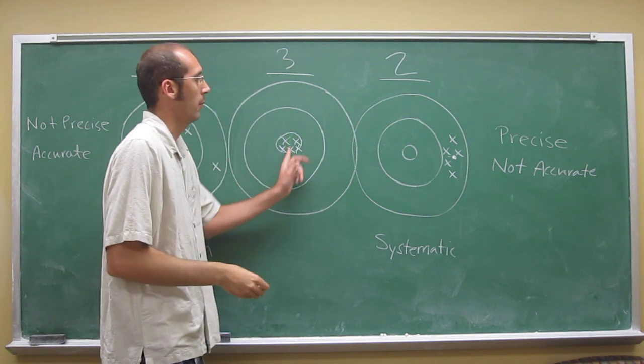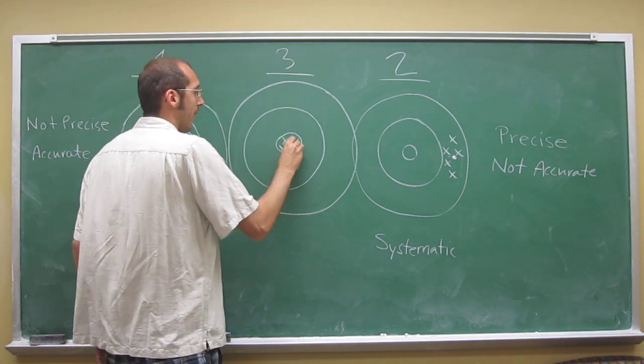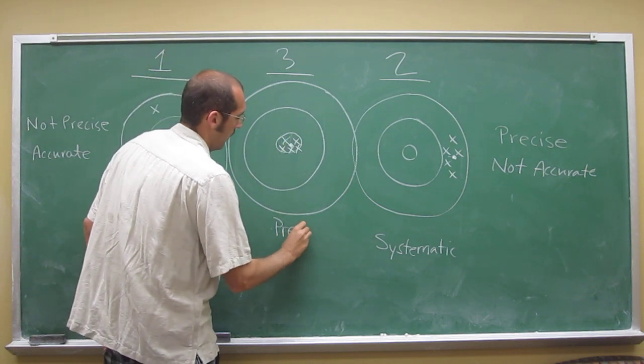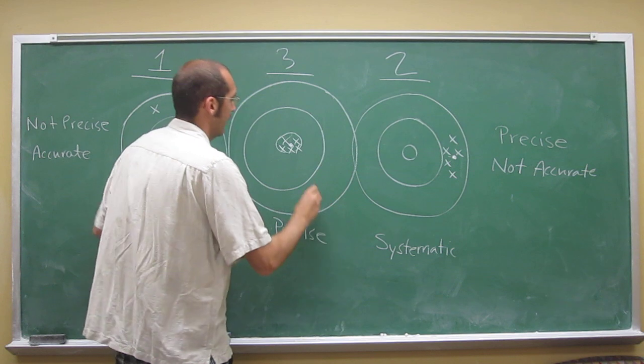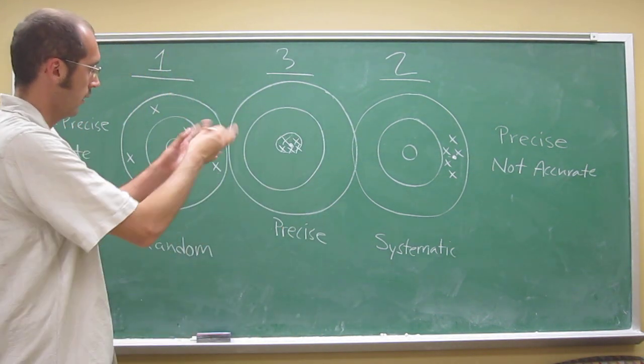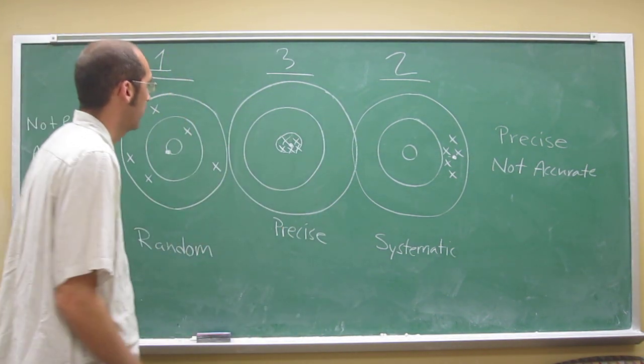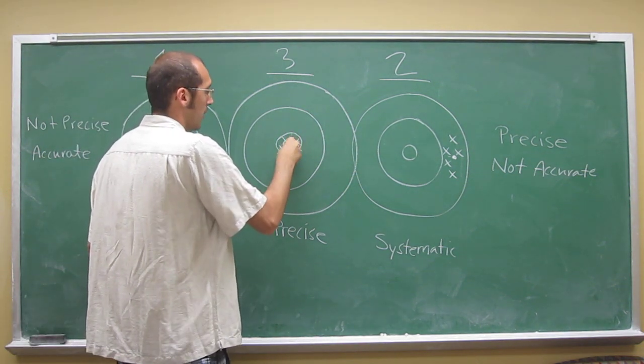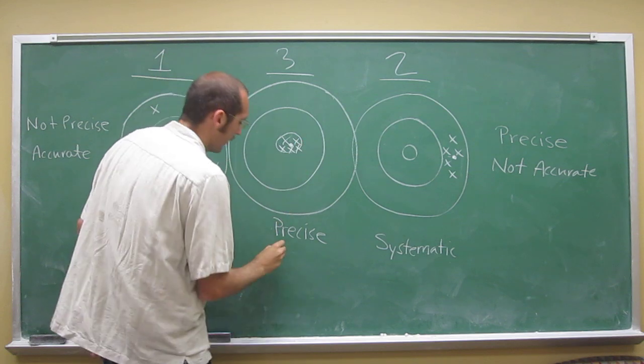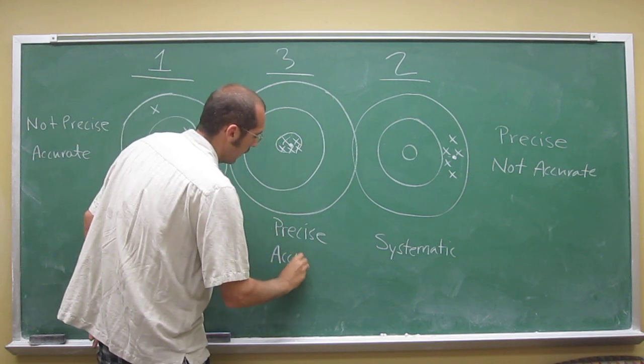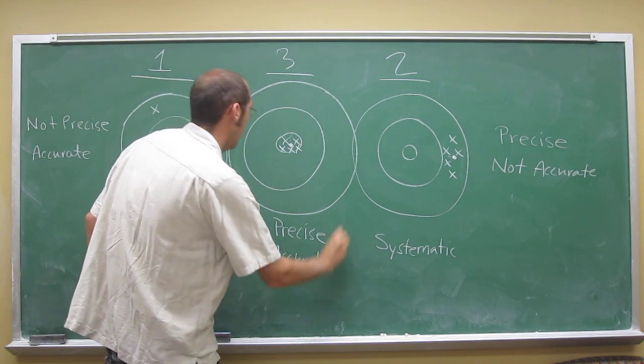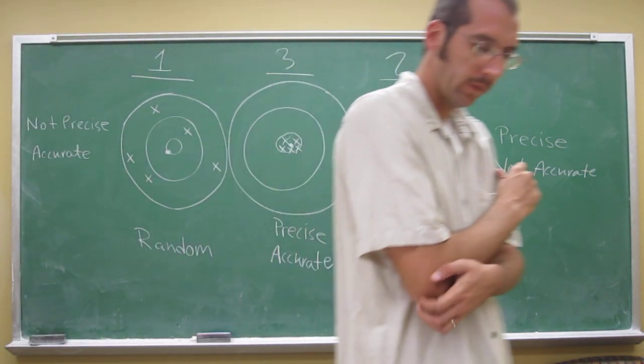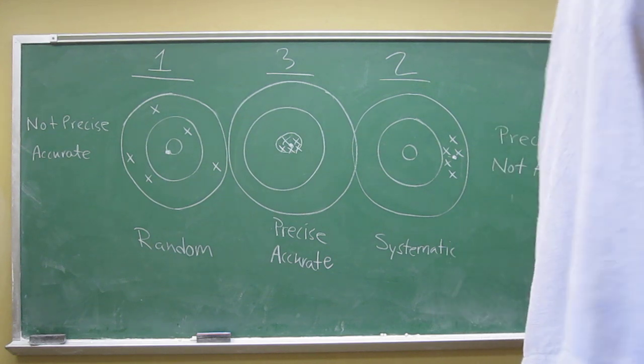All of them are bunched up, so your average is close to the collection of points, so you're very precise. And all the points are together, and you're very accurate because the average is very close to the bullseye, or the correct value.